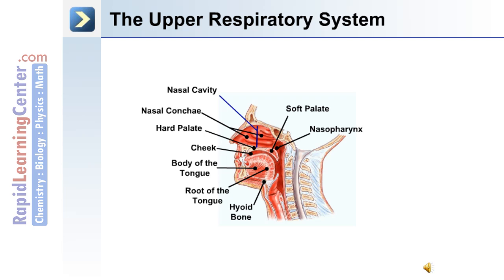A key bone in this area is the hyoid bone, and it's attached to the larynx. The oral pharynx is at the back of the mouth, and the epiglottis closes the glottis during swallowing to protect the airway.